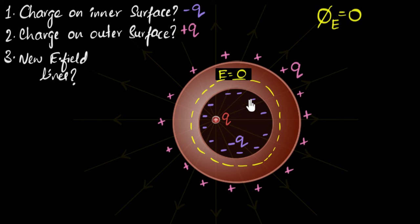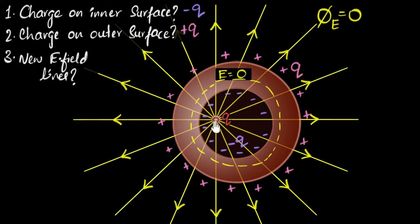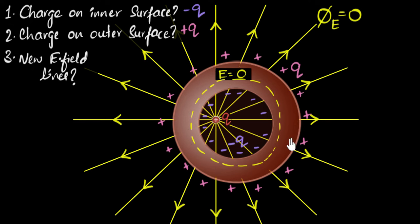We're not done yet — we also need to look at the charge distribution and what the electric field looks like. Let me bring back the original electric field. This would have been the electric field at the beginning before all these charges got induced. Now, in the electrostatic condition, the electric field inside the conductor must be zero, so we can go ahead and drop that — this electric field inside the conductor is going to disappear.